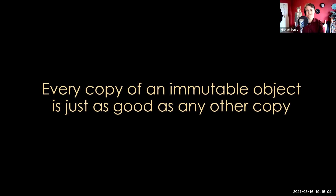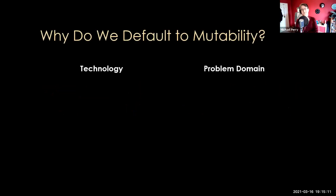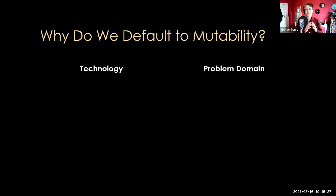This idea of immutability really helps us guarantee that every copy of an object, no matter where it is, is going to be the exact same copy. That is going to help us solve a lot of technical problems. Before we dive into real code, I want to talk about our default. When we build things using ASP.NET, SQL Server, or a NoSQL database, we default to mutability. This default comes from two different areas: the technology itself, and the problems we're trying to solve.